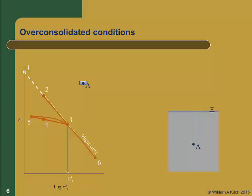We now go back out to the field and determine the current vertical effective stress sigma prime zero, again as total stress minus pore pressure. We plot sigma prime zero on our laboratory data — it corresponds to point 4, where the soil was unloaded to in geologic history — and we find that sigma prime zero is less than sigma prime c. The current vertical effective stress is less than the greatest vertical effective stress the soil has ever seen, sigma prime c. That is the definition of an over consolidated soil.